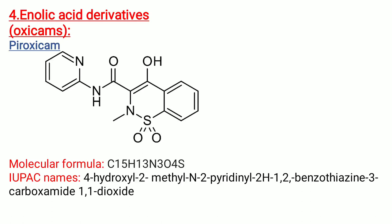Fourth is enolic acid derivatives — oxicams. We take the example of piroxicam. Its molecular formula is C15H13N3O4S. IUPAC name is 4-hydroxy-2-methyl-N-(2-pyridinyl)-2H-1,2-benzothiazine-3-carboxamide 1,1-dioxide.